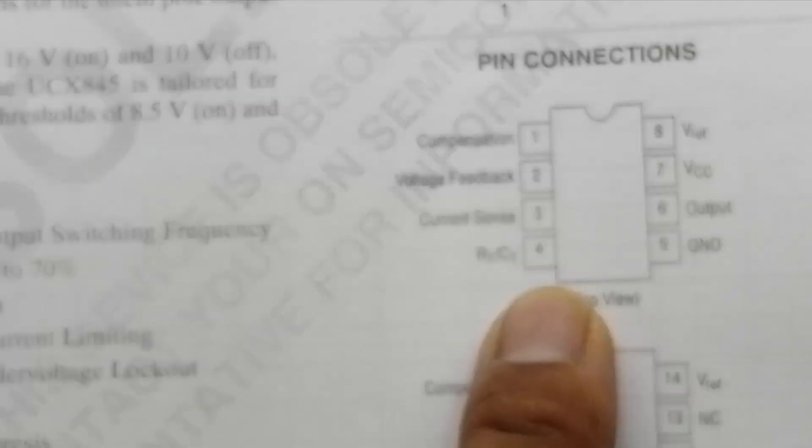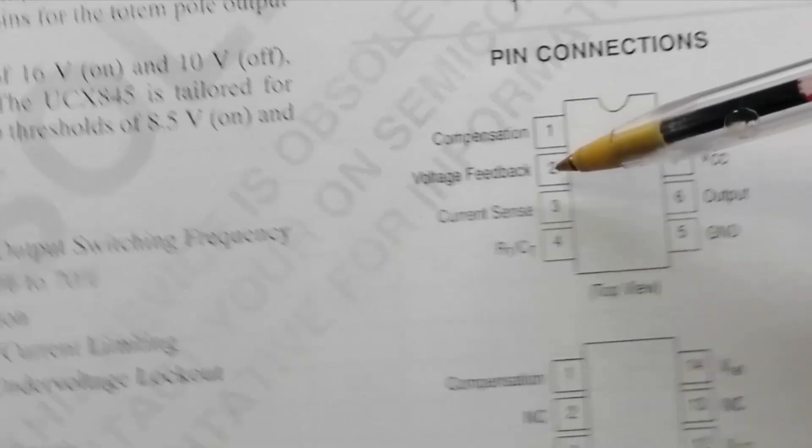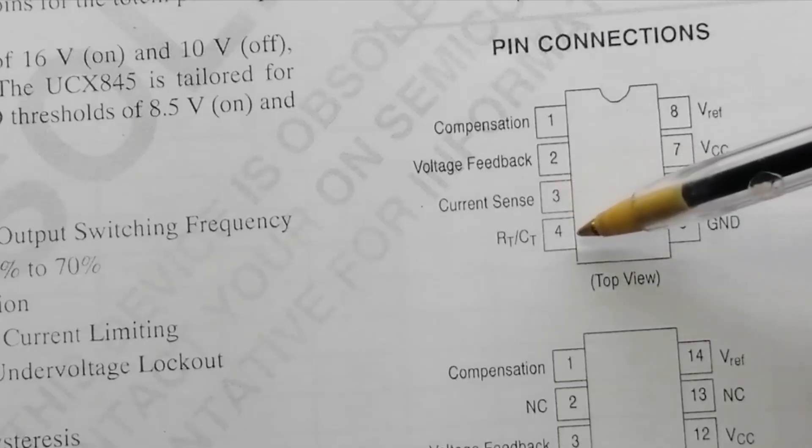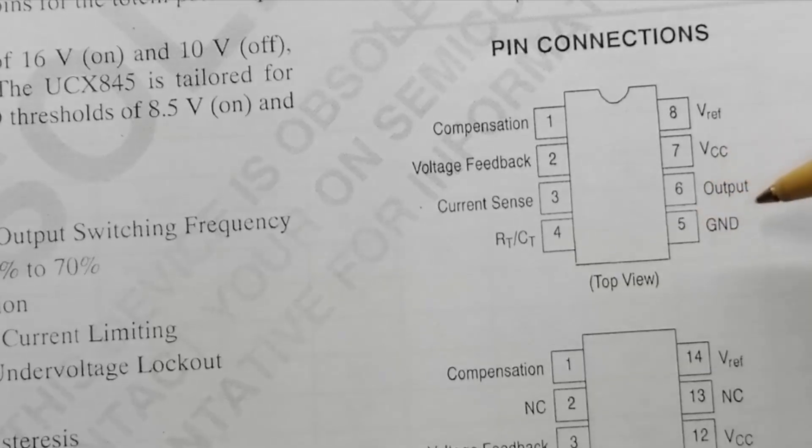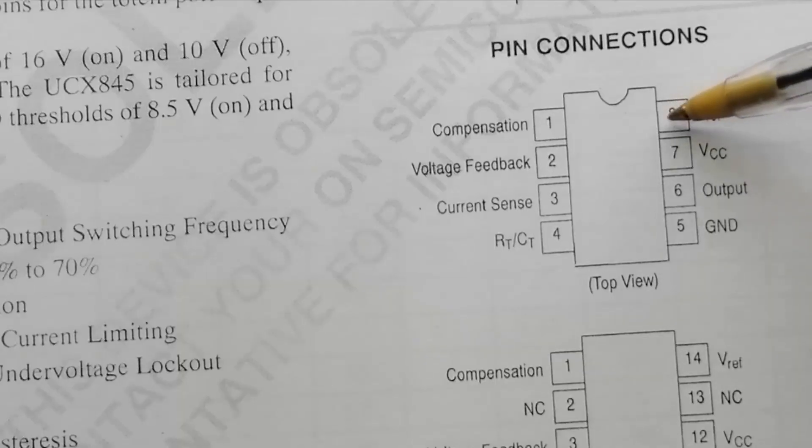Eight pin: compensation pin number one, pin number two voltage feedback, pin number three is current sense, pin number four is RTCT programming pin, pin number five ground, pin number six is PWM output.